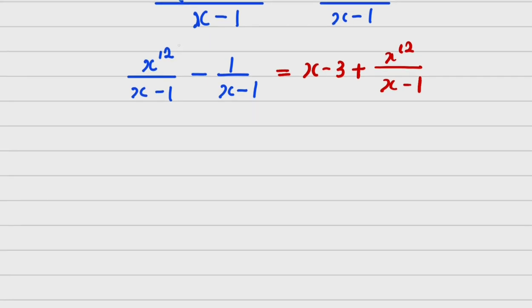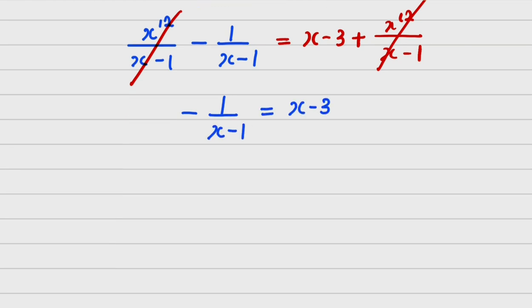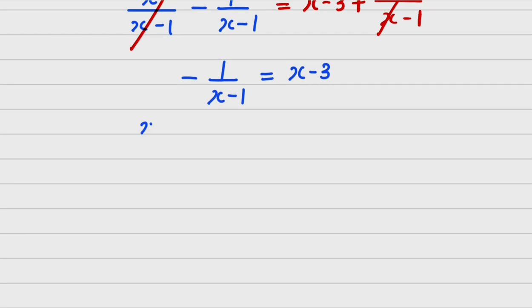this will go with this. So what I am going to be left with will be minus 1 over X, sorry, X minus 1 is equals to X minus 3. Cross multiplying, I am going to have X minus 3 into X minus 1 will be equals to minus 1.